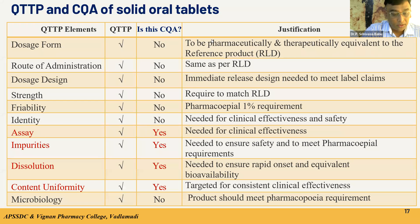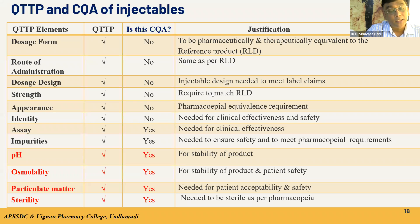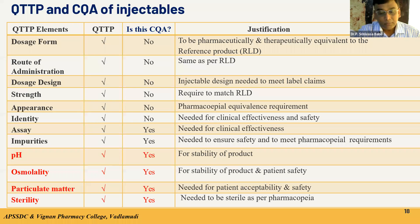For injectables as another case study, it is also very essential to check the main critical quality attributes like pH, osmolality, particulate matter, and sterility. Unlike tablets, sterility is very important for injectables and must be achieved as per pharmacopoeial requirements. Particulate matter is essential for patient acceptability and safety, and pH is important for stability of the product.